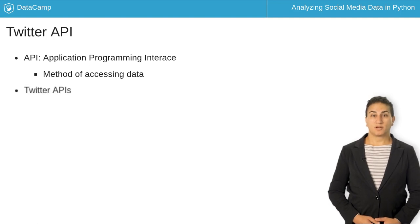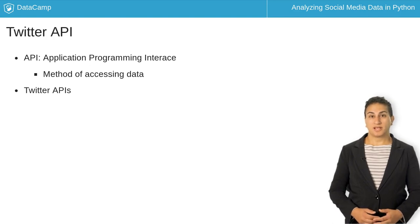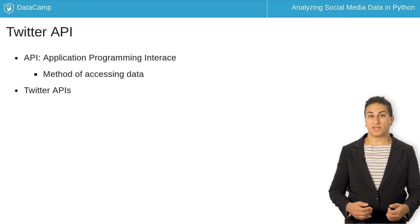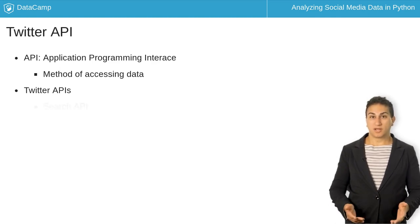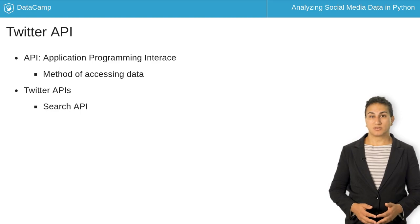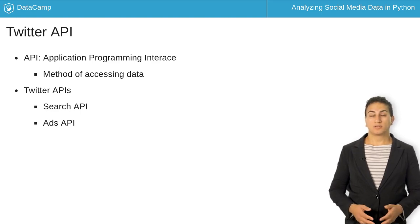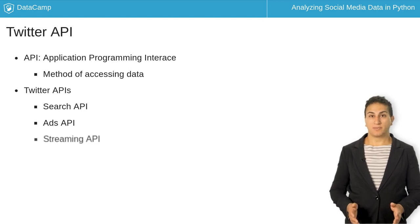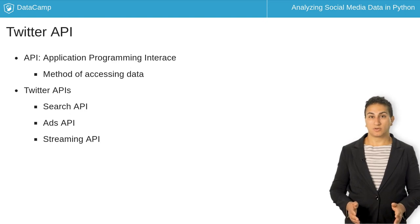Twitter has multiple APIs which can be used for different purposes. These change from time to time, and Twitter sometimes adds or removes APIs. These include the Search API, which allows access to tweets from the past week, the Ads API, which focuses on Twitter ads, and the Streaming API. We'll focus on the Streaming API for this course.